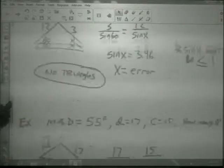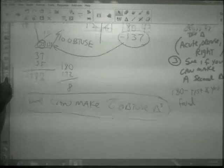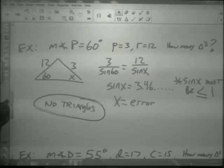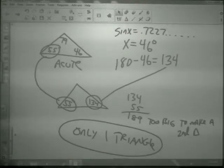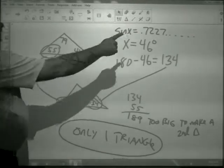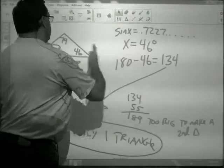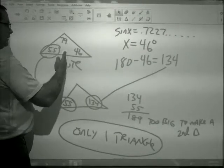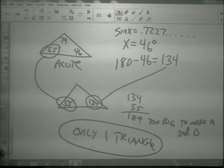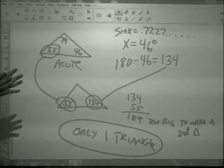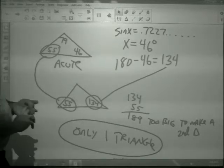Sometimes you might get two triangles. Sometimes you might get no triangles. Sometimes you might get one triangle. If this angle that you find is 90 degrees, perfectly up and down here, you'll also get just one triangle. So, our task in class is going to be to figure out how many triangles we can make.